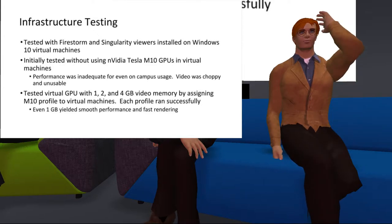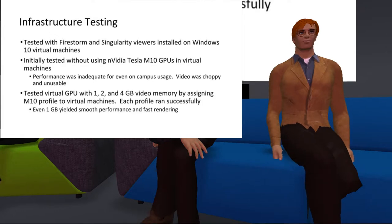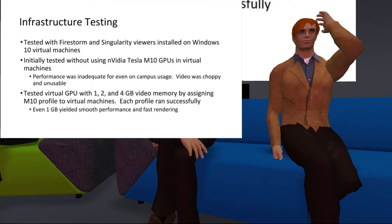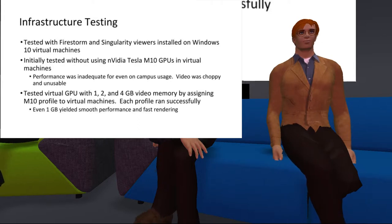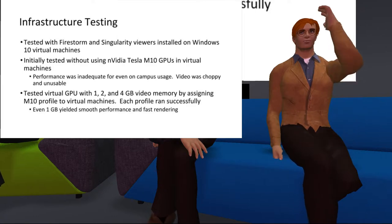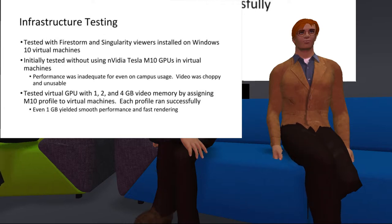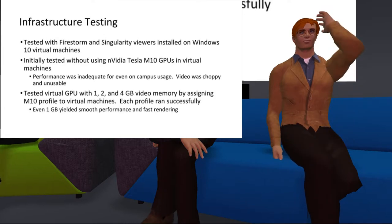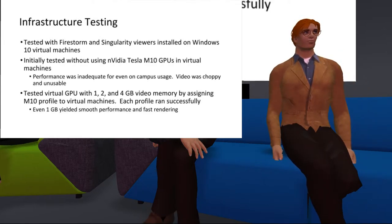Once we got the GPUs, we tested with various profiles. Each profile allocates a different amount of video memory to the virtual machine — each GPU essentially has 32 gigs of video memory, and the profiles let you carve out memory however you want. We tried one, two, and even four gig profiles. Even going as low as one gig, it ran very smoothly and was a very good experience. In fact, I'm currently accessing the grid through the virtual environment.